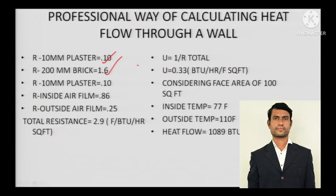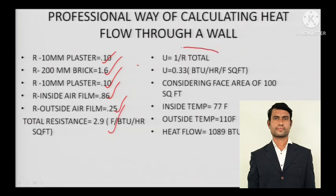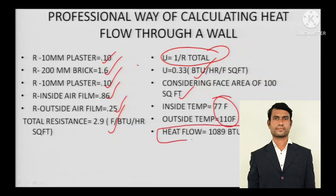So: 10 mm inside plaster, 200 mm brick wall, 10 mm outside plaster, inside air, outside air — all resistances have been calculated. Then U equals 1 divided by R. Considering a face area of 100 square feet, inside temperature of 77°F and outside temperature of 110°F, the heat flow across the wall that needs to be removed by the air conditioning unit is 1089 BTU per hour.